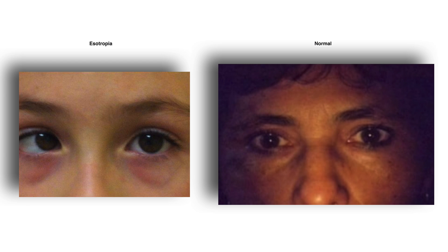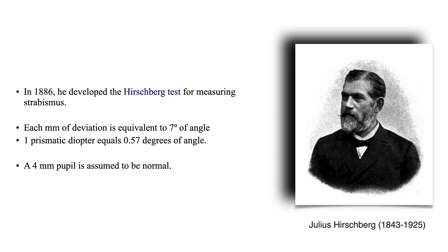Through these photos, we can help these parents and diagnose if there is a real deviation or if it is a case of pseudo-strabismus. Julius Hirschberg was a German ophthalmologist who in 1886 developed the Hirschberg test for measuring strabismus.